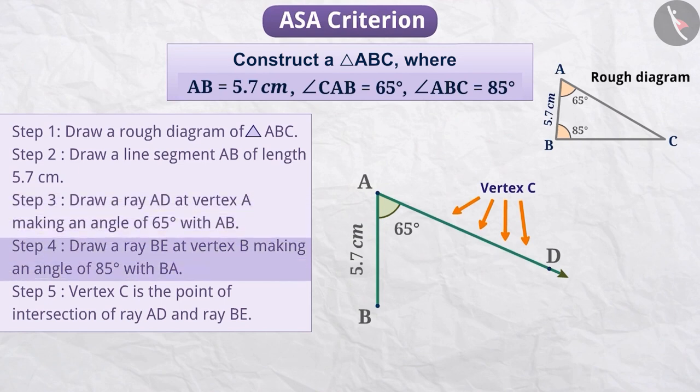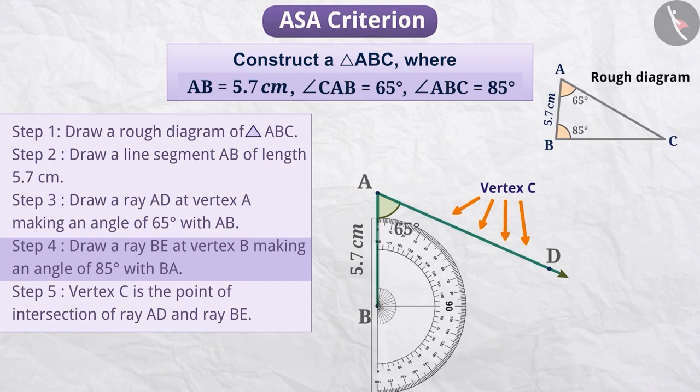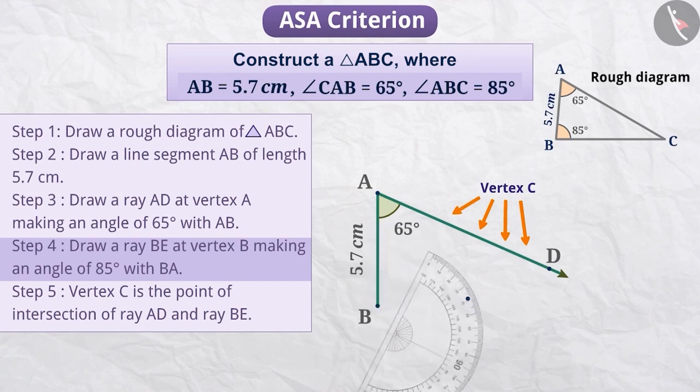Step 4. Now, we know the measurement of angle ABC. Angle ABC measures 85 degrees. Thus, with the help of a protractor at vertex B, draw a ray BE making an angle of 85 degrees with BA.